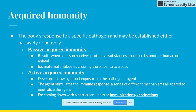Passive immunity means you didn't have to do much to get it — you receive a substance produced elsewhere, by another human or an animal. An example is maternal antibodies that cross the placenta to a baby. The baby didn't produce the antibodies; the mother did and passed them on, so now the baby has immunity to certain diseases. They passively acquired that immunity.